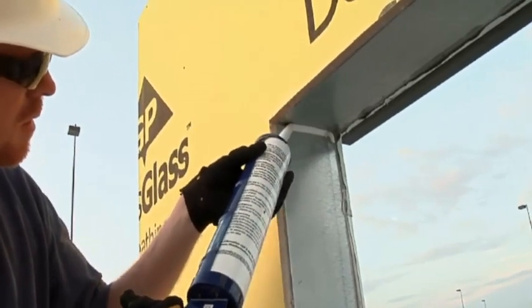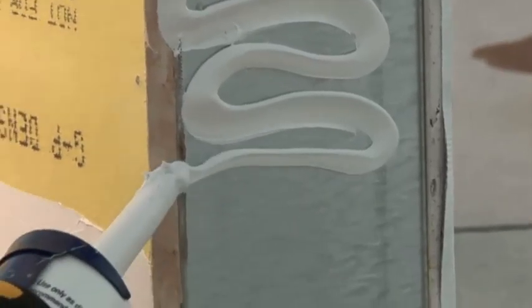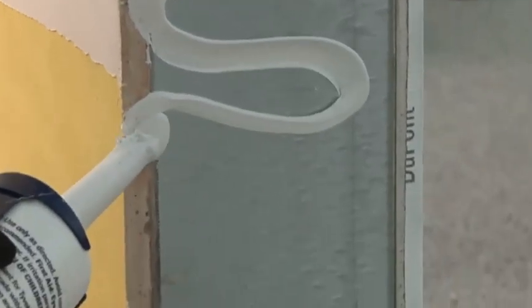Once you install the sill flashing, take the fluid-applied flashing and apply it to the jams and then to the corners of the rough opening. Work your way from the top down so that if you have any drips or any extra product that falls into the sill, you can clean it up at the end.